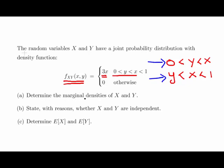We need to: determine the marginal densities of x and y; state with reasons whether x and y are independent; and determine the expected values of x and y. The key part of this question is knowing how to handle those limits correctly.